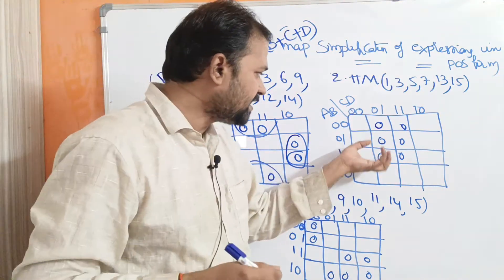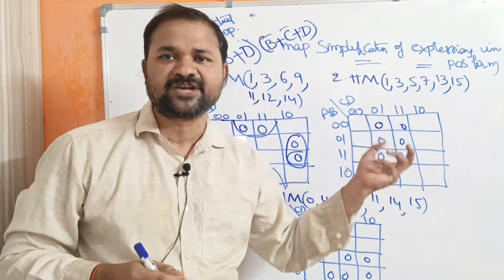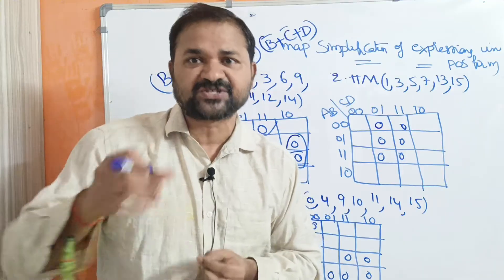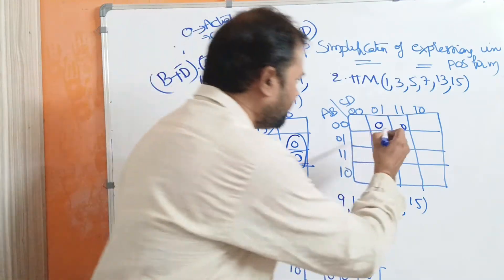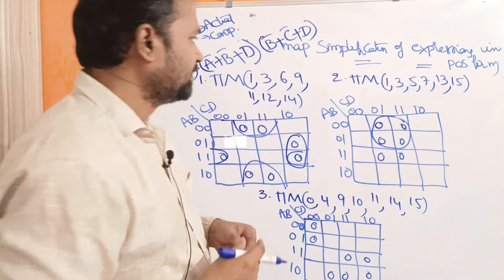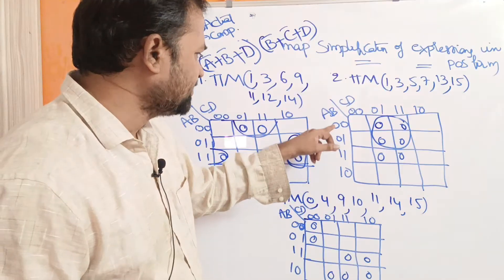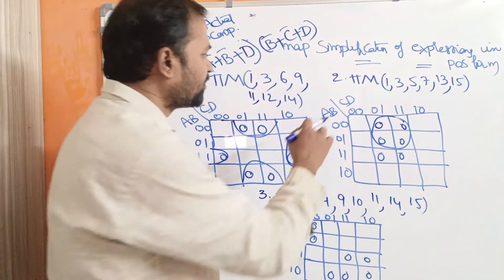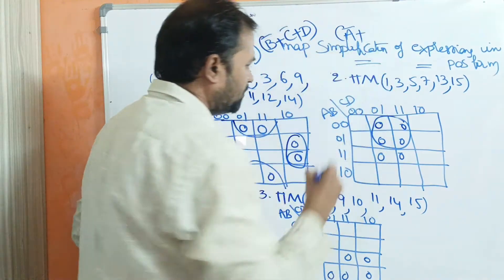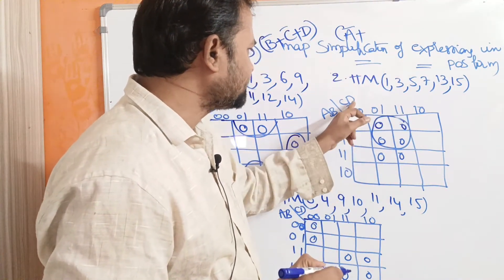Now let us solve the second problem. Here we cannot make all six zeros as a single group because groups must be in powers of two. So we make these four cells as one group. Observing 0001, the first zero is common — zero means complement of the variable — so we write Ā. Then 0111, the second one is common. The second one is D.